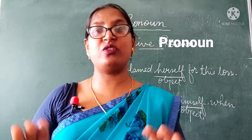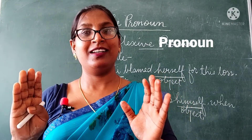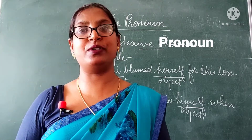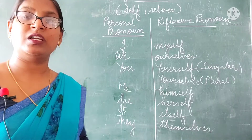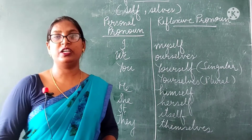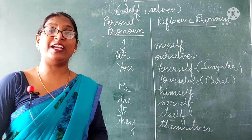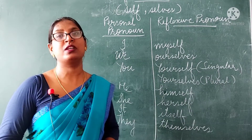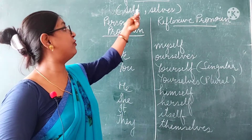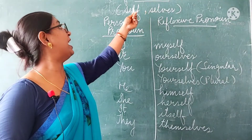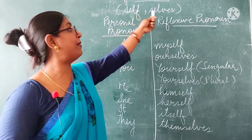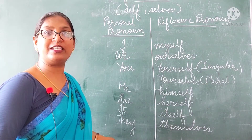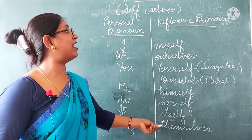Dear children, always remember: in a reflexive pronoun, the subject and the object are the same person. Now look at the table on the board. How do we form reflexive pronouns? Reflexive pronouns are formed with the help of personal pronouns by adding the suffix "-self" or "-selves." We add "-self" for singular forms and "-selves" for plural forms.